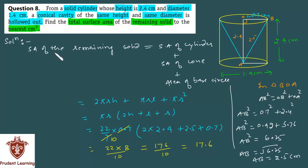Since you have found surface area, unit will be centimeter square. Finally surface area of remaining solid is 17.6 centimeter square. But in question, what is given? We have to find the total surface area of the remaining solid to the nearest centimeter square.